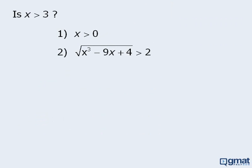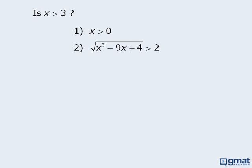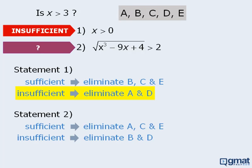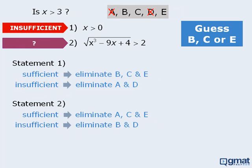Let's look at another example. Here we want to determine whether x is greater than 3. Statement 1 tells us that x is greater than 0, so it is not sufficient. Now statement 2 looks very confusing, so let's say that we are unable to determine whether or not this statement is sufficient. At this point we must guess. The elimination method tells us that if statement 1 is insufficient, then we can eliminate answer choices A and D. When we do this, three answer choices remain, so we will guess B, C, or E.